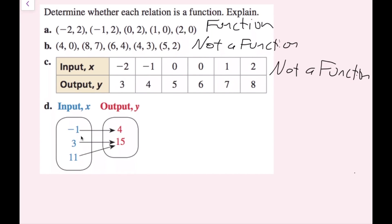Last, we have a mapping diagram. Looking at input x and output y: negative one goes to four, three goes to fifteen, eleven goes to fifteen. This is a function because each input is going to one output. If eleven went to both fifteen and four, this would not be a function. But since that's not the case, this is a function.